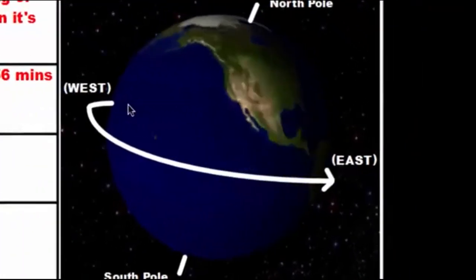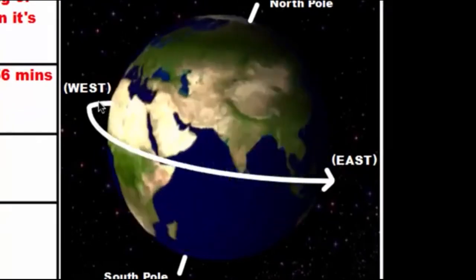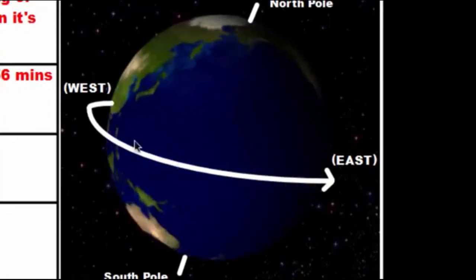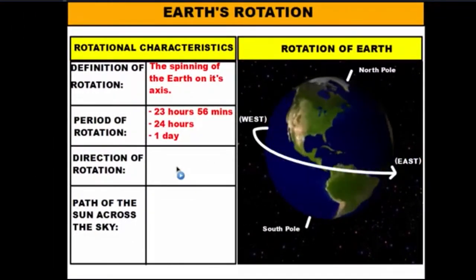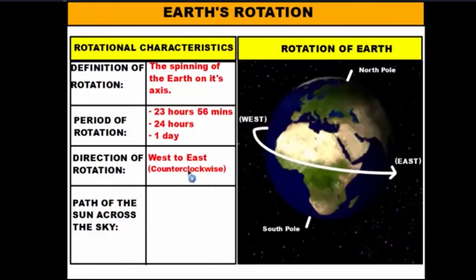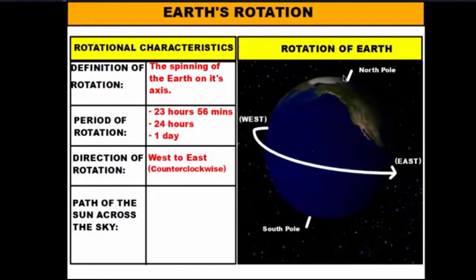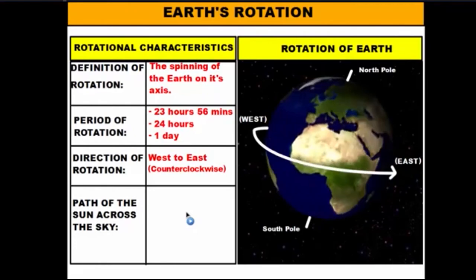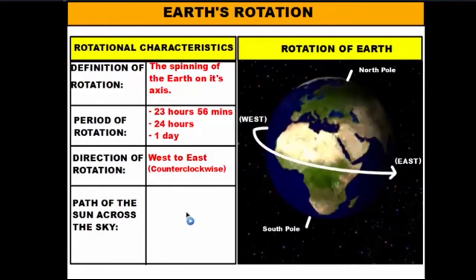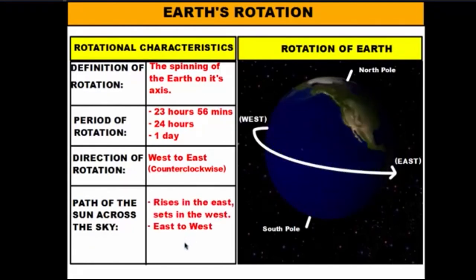If you take a look at this animation, you'll notice that the Earth spins in a particular direction. The land masses start from the west and go east, west and go east. So the direction of the rotation is from west to east. If you look at this rotation from above the North Pole, you'll see that it goes in a counterclockwise direction. The rotation of the Earth affects the path of the sun across the sky. Because of this counterclockwise west to east rotation, our sun is always going to rise in the east and then set in the west.